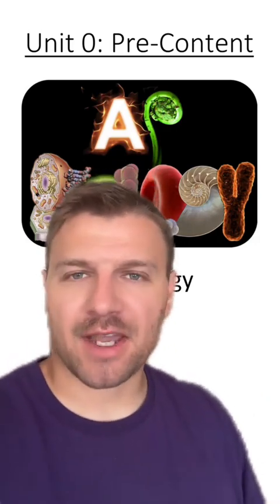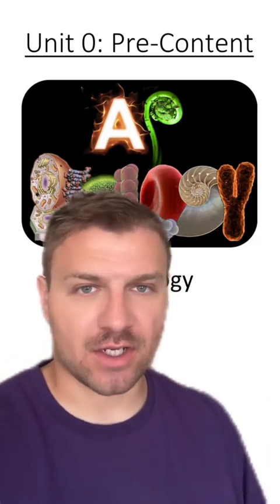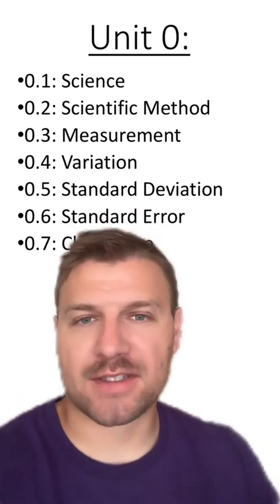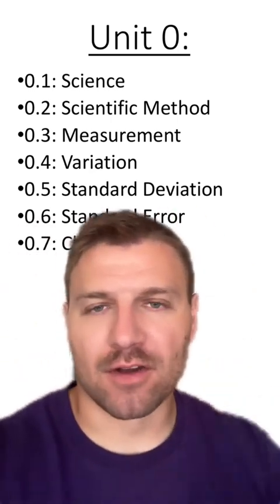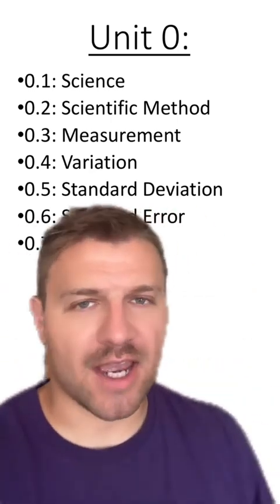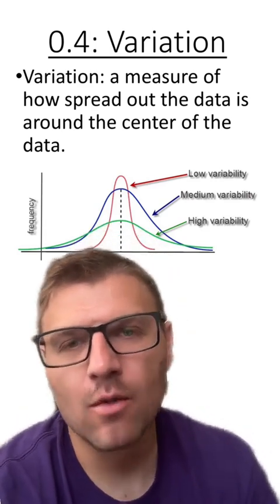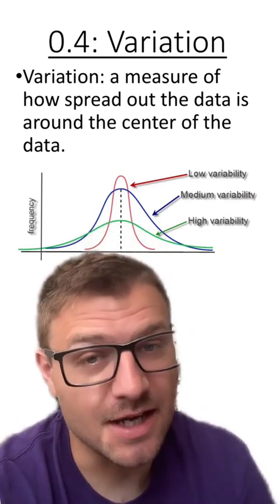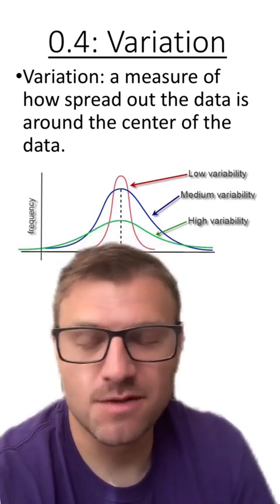In this short section of unit zero for AP Biology, we're going to go over something called variation. It's going to be our penultimate section before all of the math is involved within AP Biology. Remember that variation is just a measure of how much spread there is within the data around some type of center, usually the mean.